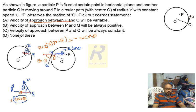That means, it is said in option A, velocity of approach between P and Q will be variable. I will take it later. So in option B, velocity of approach between P and Q will be always positive. Yeah, definitely this is right. Because I have given you the reason, this is always positive. Velocity of approach means Q to P. So Q to P direction is always positive. So for that I can choose option B as the right one.